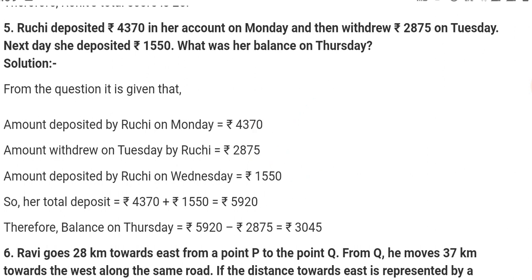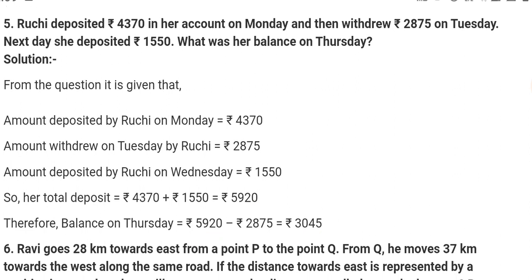Total deposit, that is 4370 and 1550. So it is 5920. Now the withdrawal is minus 2875, will subtract. So 5920 minus 2875, answer will be 3045. This is the final answer. Next move, next question.